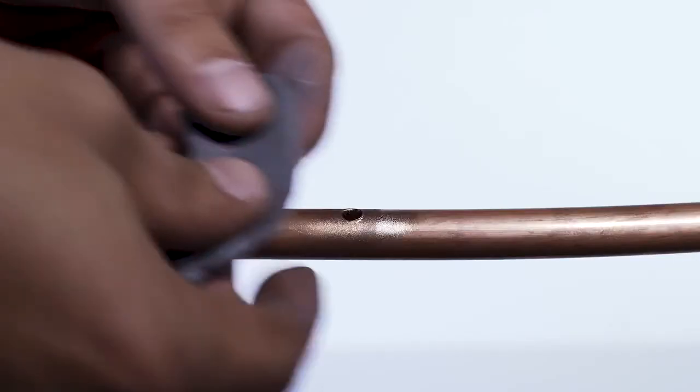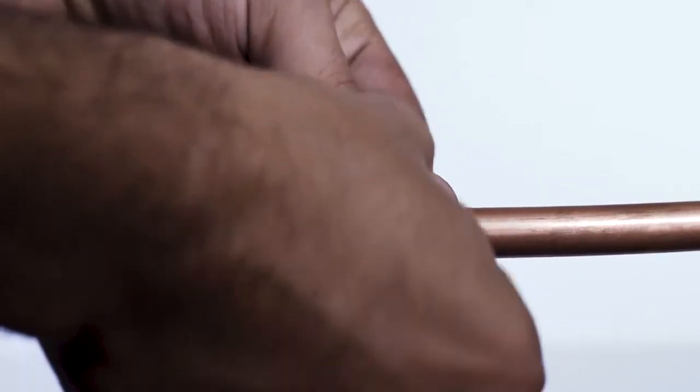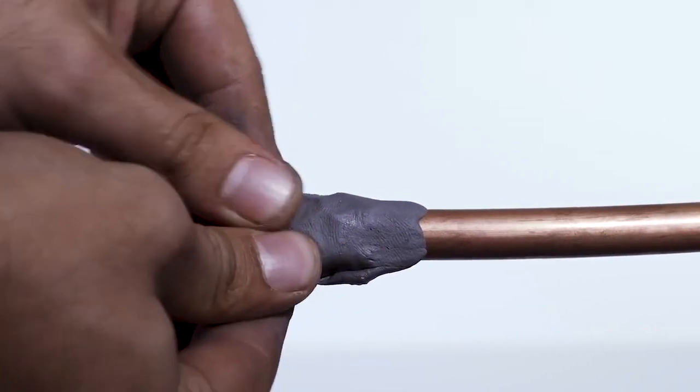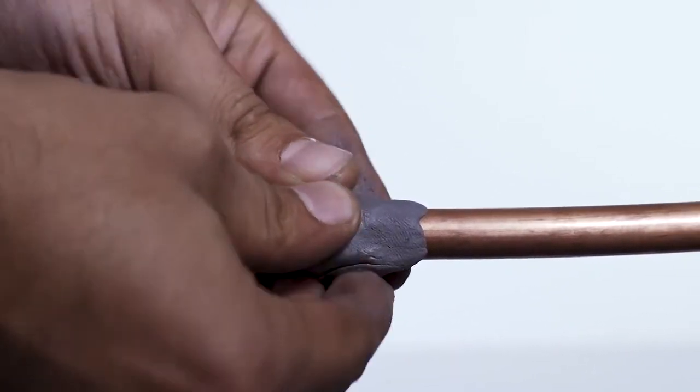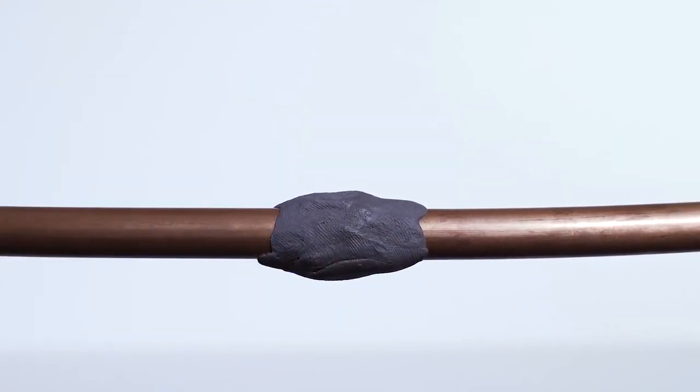Apply the external around the circumference of the tubing. You need about a quarter inch of product on either side of the hole. The thickness of the putty around the tubing should be at least the same as the size of the hole. So if the hole is three millimeters wide, then the external around the tubing should be at least three millimeters thick.